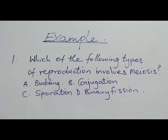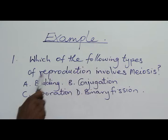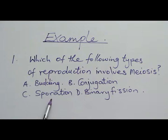Let's look at the first example. Which of the following types of reproduction involves meiosis? A. Budding. B. Conjugation. C. Sporulation. D. Binary fission.